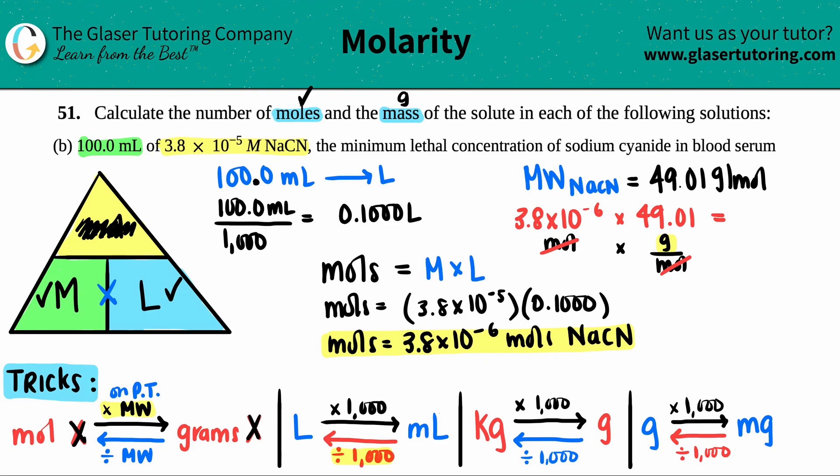So let's just do the calculation and call it a day. So let's see. We got 3.8 times that. Okay. So that times 49.01. Let's keep with the two sig figs. So I get 1.9 times 10 to the negative fourth. And that's grams of NaCN. So there is the second answer.